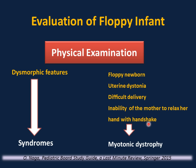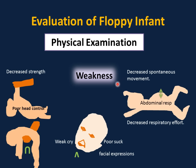If you have a floppy newborn with a history of uterine dystonia and difficult delivery, and inability of the mother to relax her hand on a handshake, this is highly suggestive of myotonic dystrophy. Signs of weakness in hypotonia: holding an infant in supine position and pulling from the hands to sitting position, you will see no head control whatsoever. Absence of head control beyond four months of age is abnormal. If you hold an infant with hypotonia from the abdomen, the head and limbs hang limply with no resistance, giving the characteristic inverted U appearance. They have a specific facial expression with an inverted V-shaped lip, a weak cry, and poor suck and poor feeding.